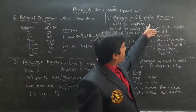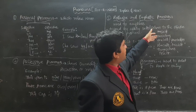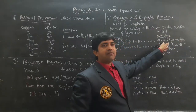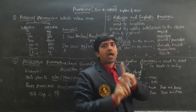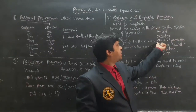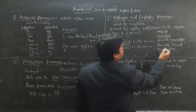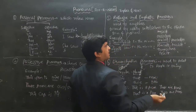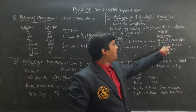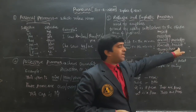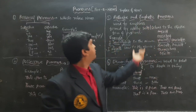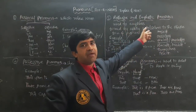The reflexive/emphatic forms are: myself, ourselves, yourself, yourselves, himself, herself, themselves, itself. For 'you,' singular uses 'yourself' and plural uses 'yourselves.' He — himself, she — herself, they — themselves, it — itself.